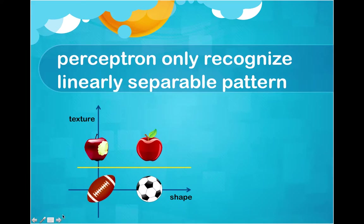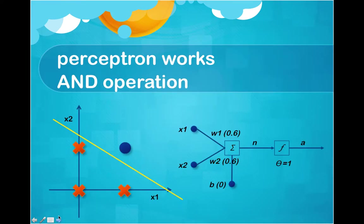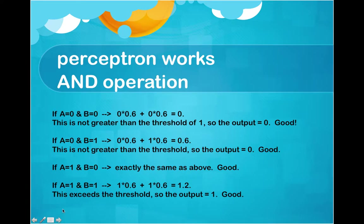The perceptron only recognizes linearly separable patterns. Here's the AND operation — as you can see, we can linearly separate this one. In this example I gave weight 1 as 0.6, weight 2 as 0.6, and bias is 0. If you have time you can calculate using the activation function with threshold 1. Here is the answer — stop the video and calculate yourself, it will be very helpful to you.